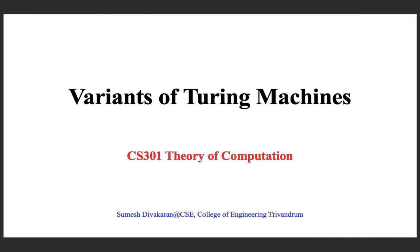We shall discuss about two other variants of Turing machines. They are actually equivalent in power to the Turing machine that we discussed. What we discussed is called the standard Turing machine model, where we have a control unit with finitely many states and a semi-infinite tape. Now we can look at some variants of Turing machines.